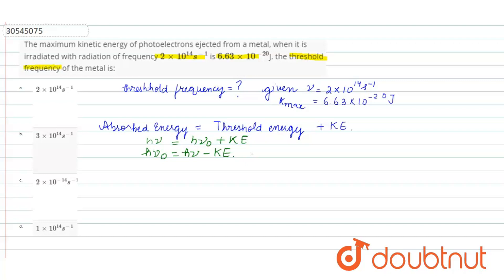So, putting the values. 6.626 into 10 raise to power minus 34 into nu naught. This is to be found out. 6.626 into 10 to power minus 34 into nu that is given to be 2 into 10 raise to power 14 minus the kinetic energy that is 6.63 into 10 raise to power minus 20.